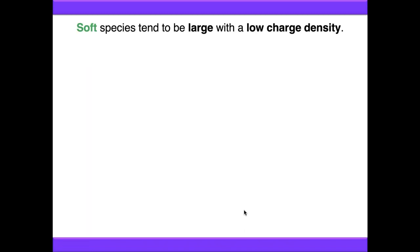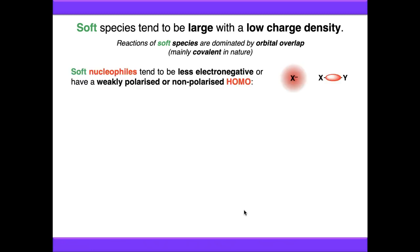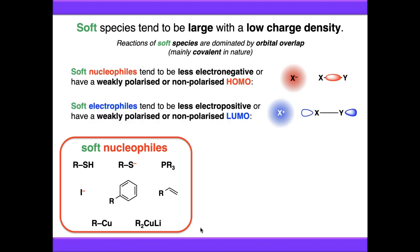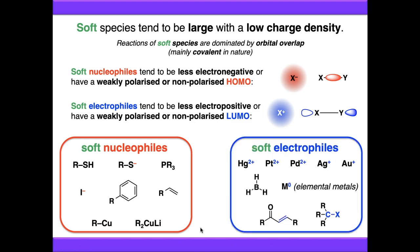Soft species tend to be large and have a low charge density — their reactions are more covalent in nature, dominated by good orbital overlap rather than electrostatics. Soft nucleophiles tend to be less electronegative, weakly polarised or non-polarised — further down the periodic table, larger elements such as sulphur compared to oxygen, phosphorus, and larger halides like iodine. In contrast to hard organolithiums and Grignard reagents, organocopper reagents tend to be softer nucleophiles and are used extensively in 1,4 conjugate addition chemistry. Soft electrophiles are less electropositive, weakly polarised, such as larger metal ions in low oxidation states, elemental metals, and alkyl halides.